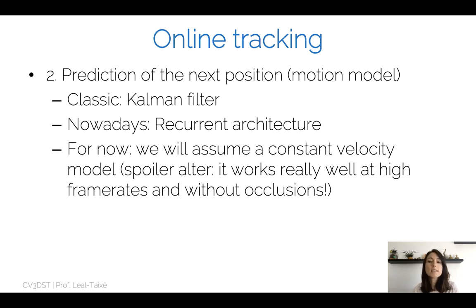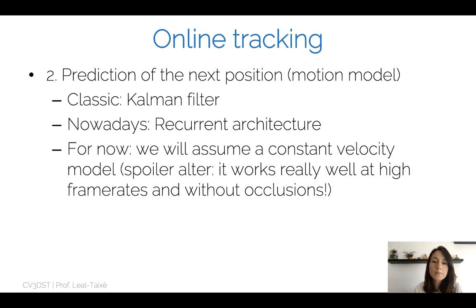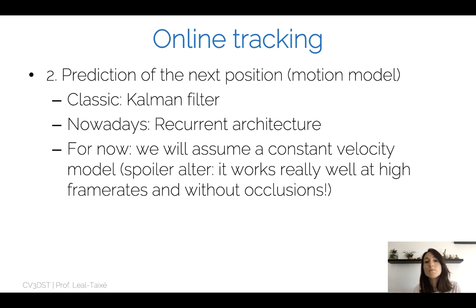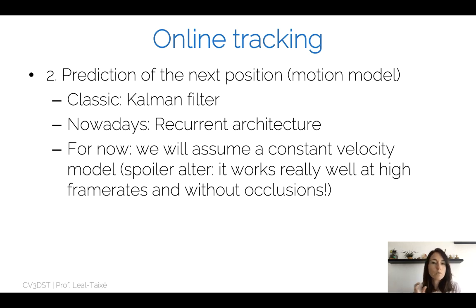The second step — predicting the next position — means building a motion model for the target we want to follow. The classic way is using a Kalman filter, but nowadays many people use a recurrent architecture to learn the motion model in a data-driven way. For now, we will assume a constant velocity model. For really high frame rates, where the object moves just a little between frames and there are no occlusions, this assumption is actually very powerful and works well.